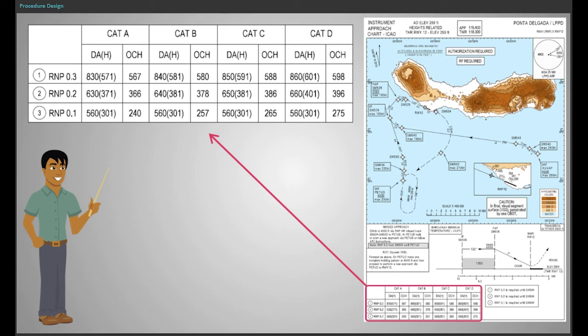As the RNP value defines the width of the obstacle clearance corridor, different minima apply according to the RNP value.